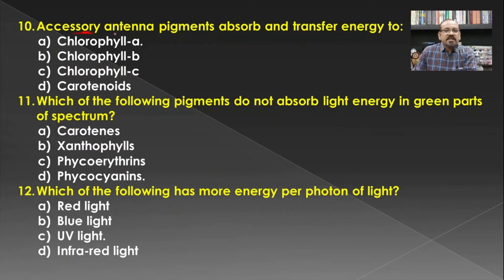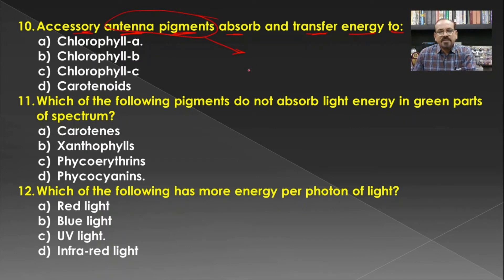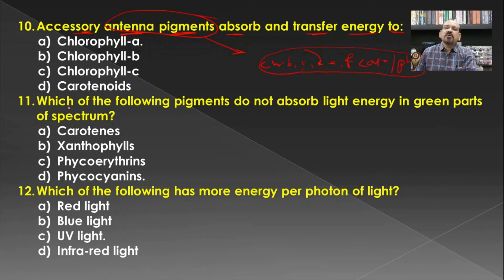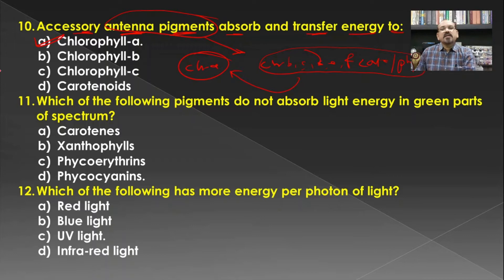Accessory antenna pigments absorb and transfer energy to what? Antenna pigments include all pigments except chlorophyll A — that is chlorophyll B, C, D, E, F, as well as carotenoids and phycobilins. These are considered antenna pigments, because chlorophyll A is the reaction center. Hence all these pigments absorb light energy and transfer it to chlorophyll A. The correct answer is chlorophyll A.